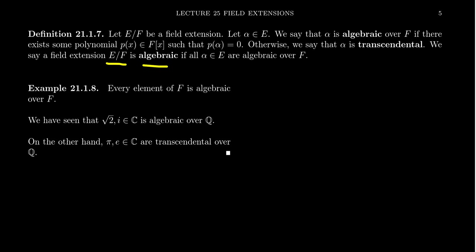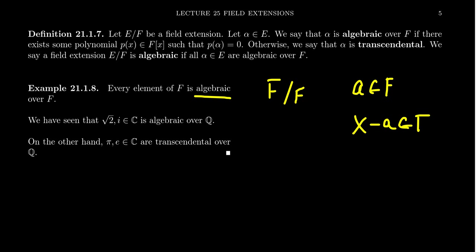If no such polynomial exists, then we say that alpha is a transcendental element. If every element of the field extension E over F is algebraic, then we say that the extension is an algebraic extension. If you don't have an algebraic extension, you necessarily have a transcendental extension — though in a transcendental extension not every element is transcendental. The most trivial field extension is to extend F over itself, which is in fact an algebraic extension, because for any element a in F, the polynomial x minus a belongs to F[x] and a is a root of it.